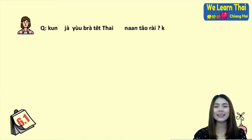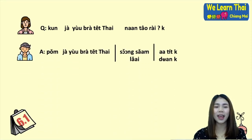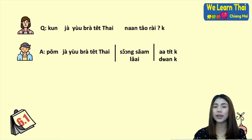Let's see the structure and pattern for asking someone how long. You can say: คุณจะอยู่ประเทศไทยนานเท่าไรคะ? — 'How long will you stay in Thailand?' For the answer, you can say: ผมจะอยู่ประเทศไทยสองสามอาทิตย์ครับ — 'I will stay in Thailand for a few weeks.' You can use สองสาม (song sam) to mean 'a few.'